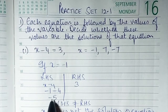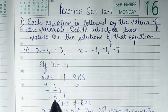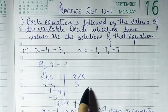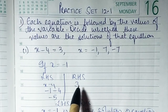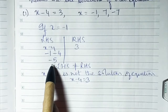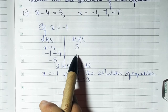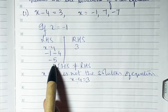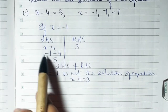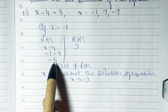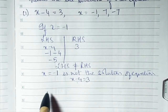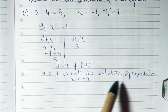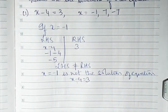Substituting x = -1: minus 1 minus 4 gives minus 5. RHS remains 3. Since LHS = -5 and RHS = 3, they are not equal. Therefore, LHS is not equal to RHS, and x = -1 is not the solution of x - 4 = 3.